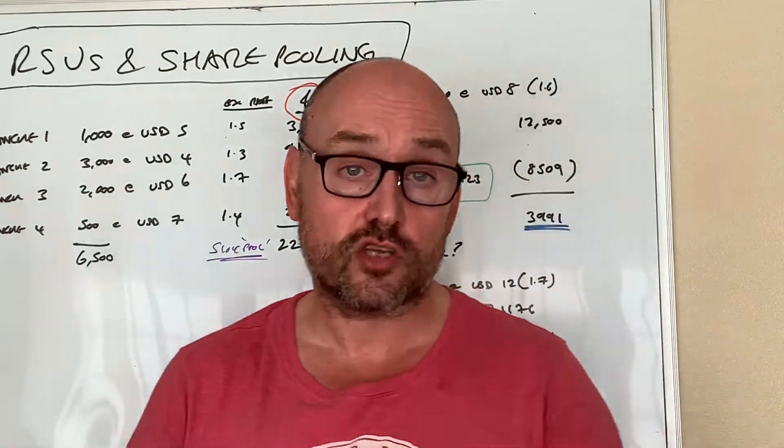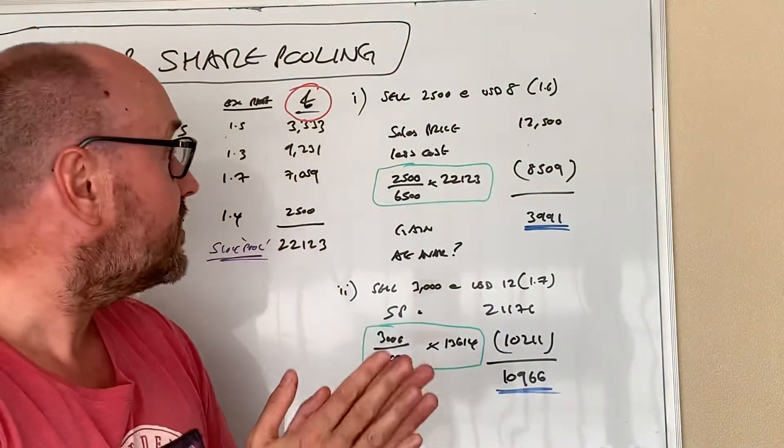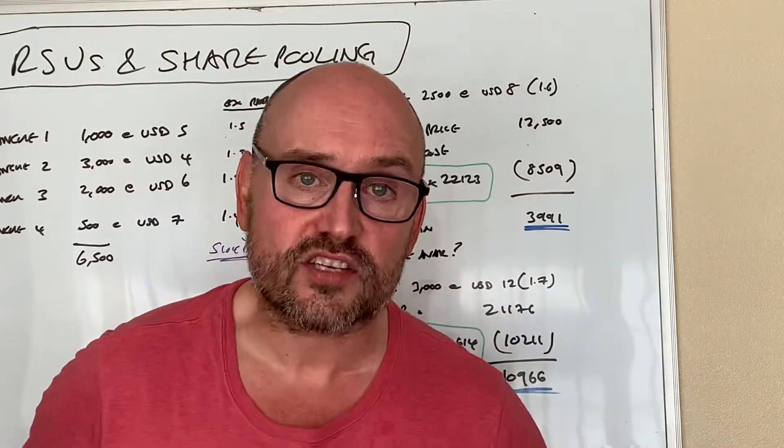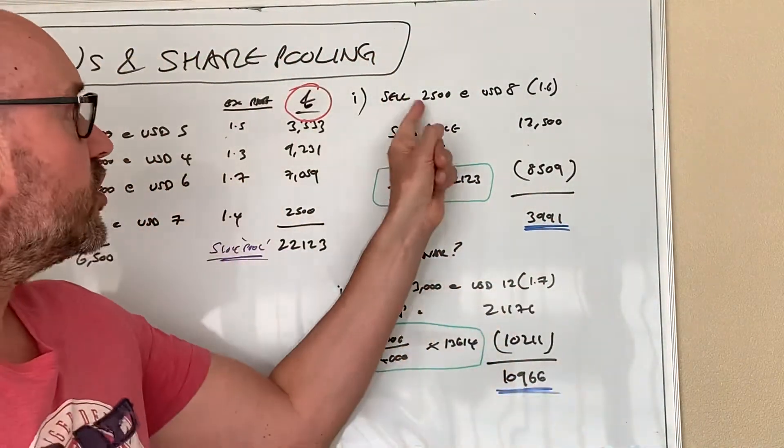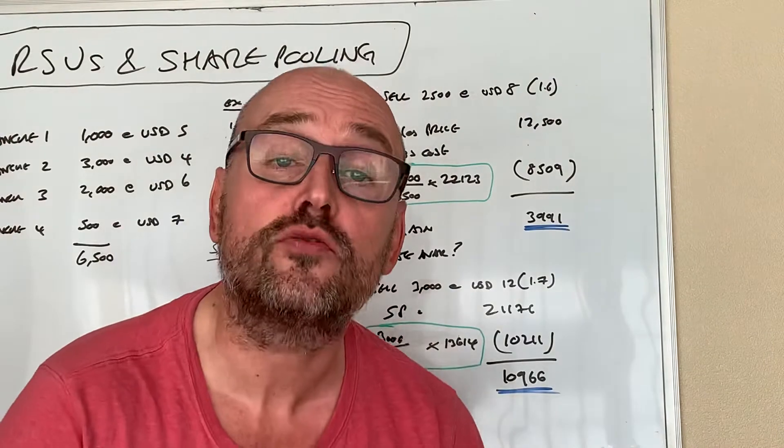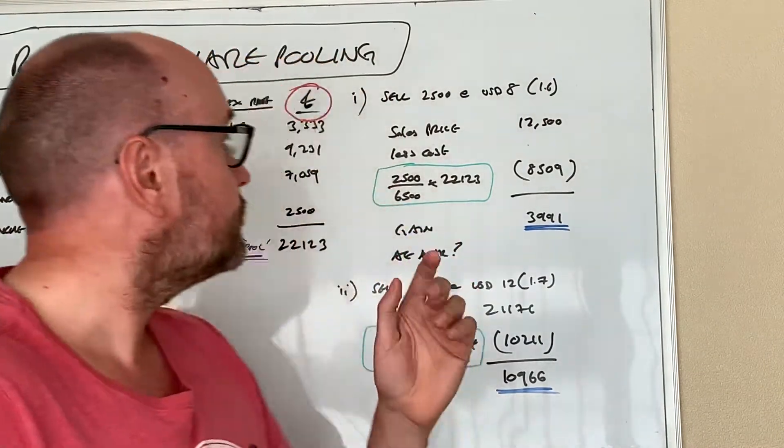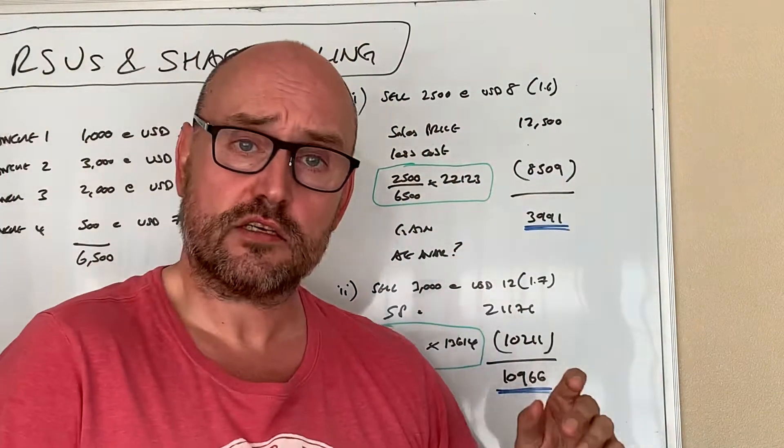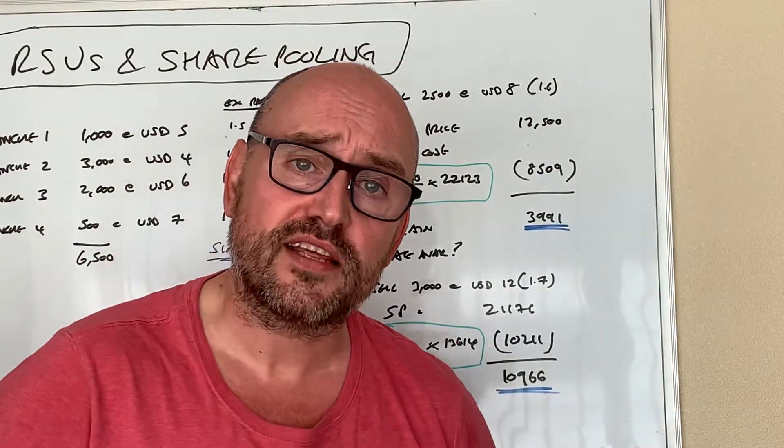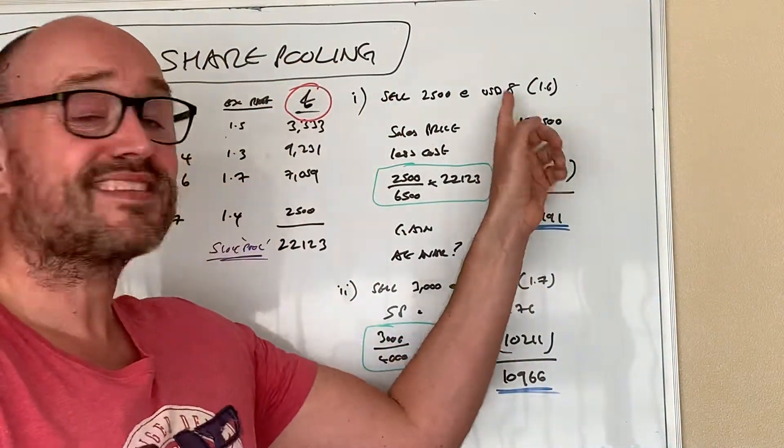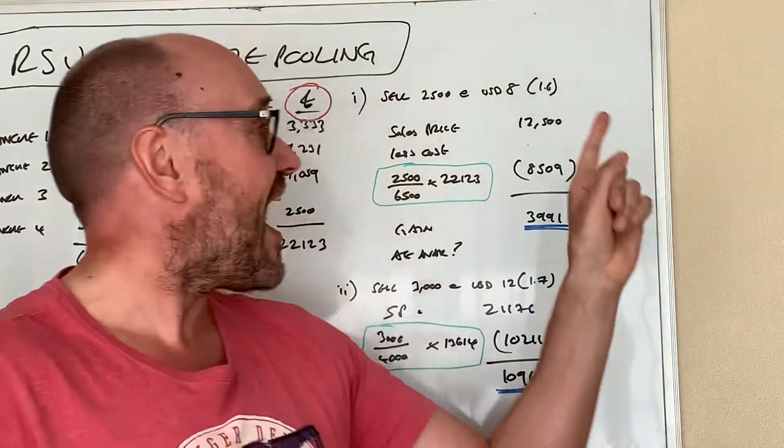Moving forward, let's say that they do decide to sell a tranche. They're going to sell two thousand five hundred of these shares. The market price they could get for those shares at this point, let's say it's eight dollars a share and the conversion rate is 1.6 dollars per pound.